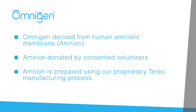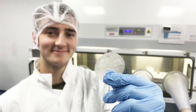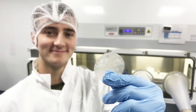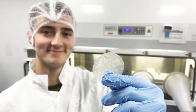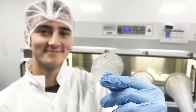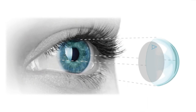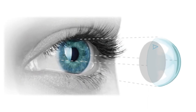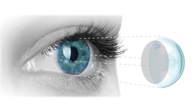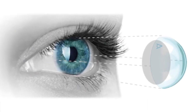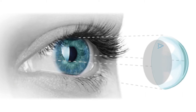Once donated, amnion is transported to us and prepared using our proprietary terrio-manufacturing process. This delicately preserves the tissue and its healing properties in the dry and convenient format we call Omnigen.